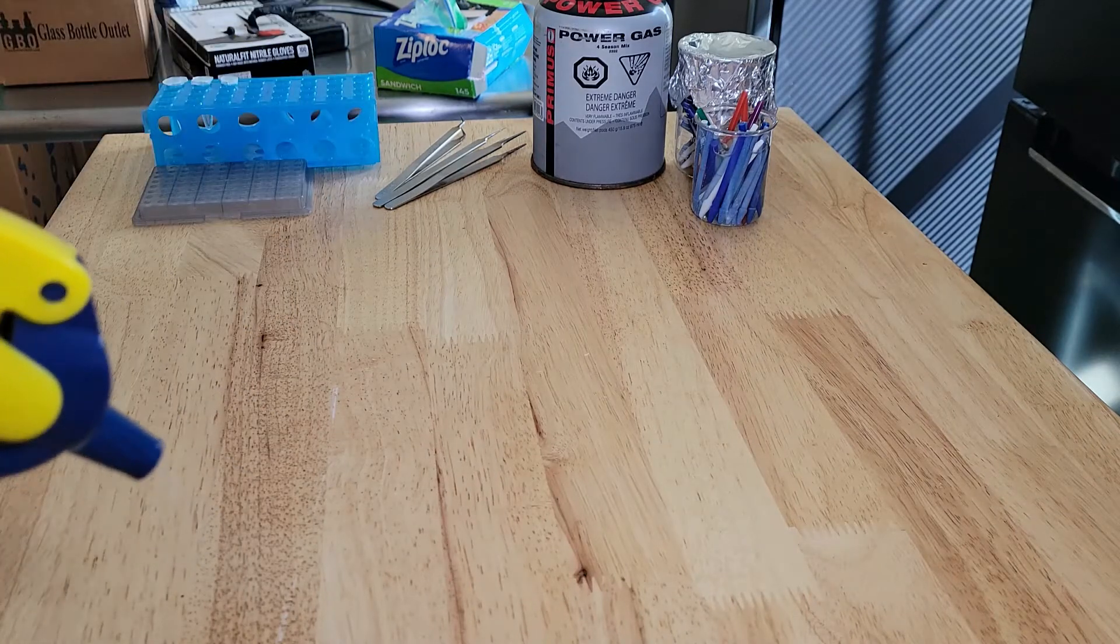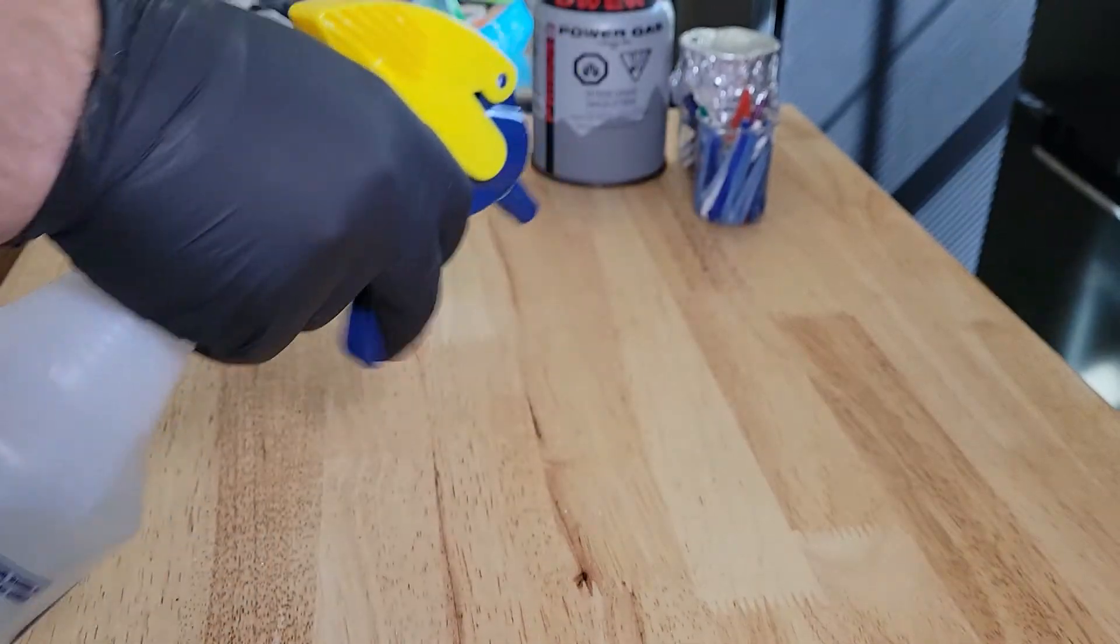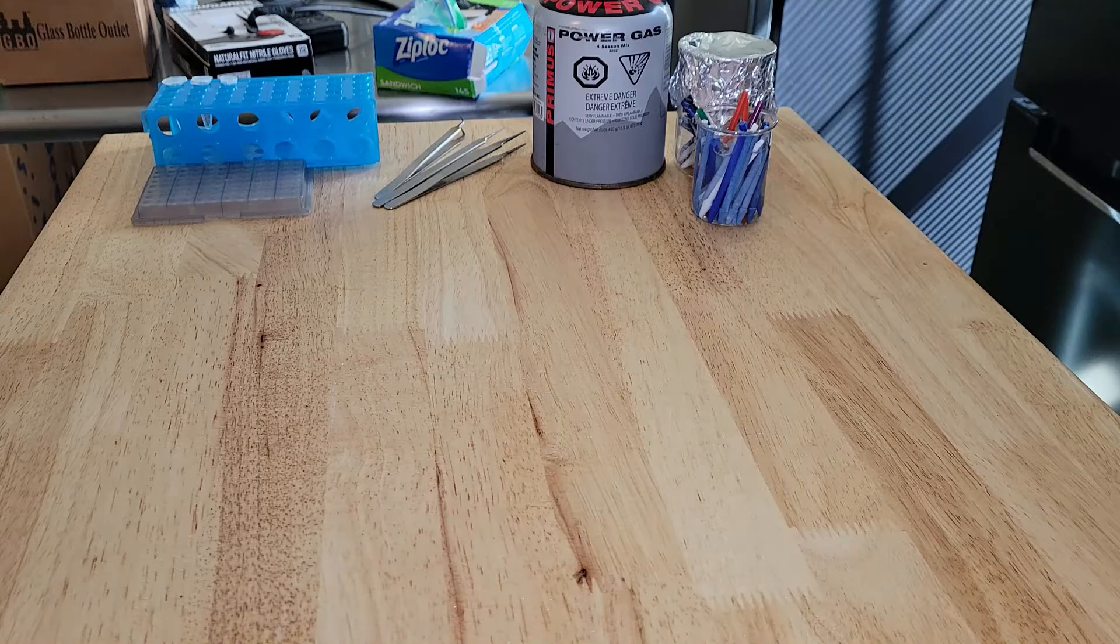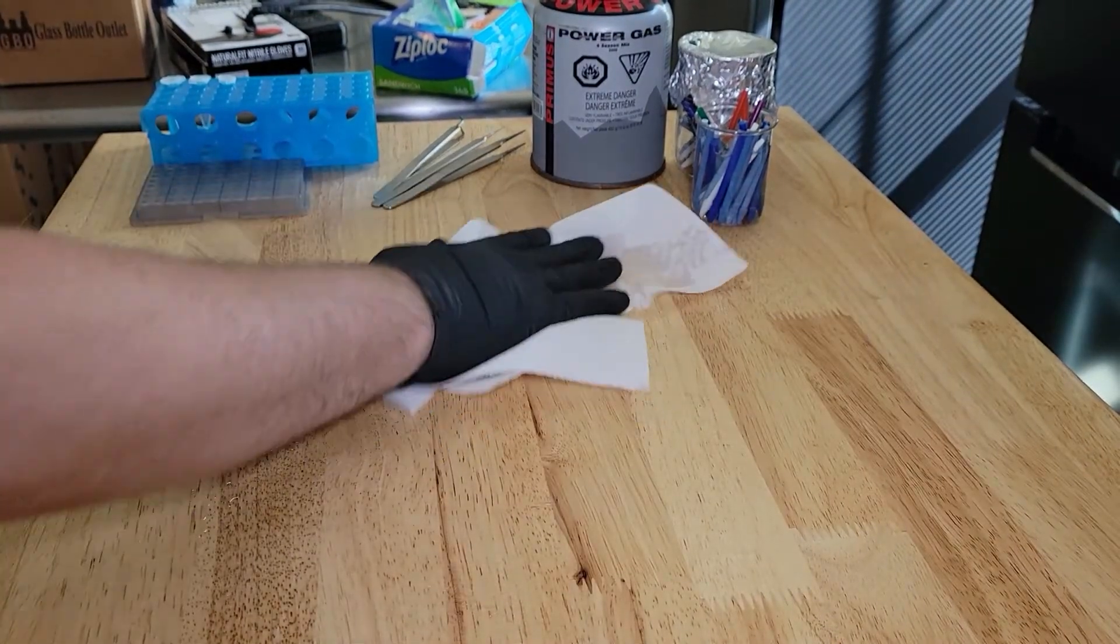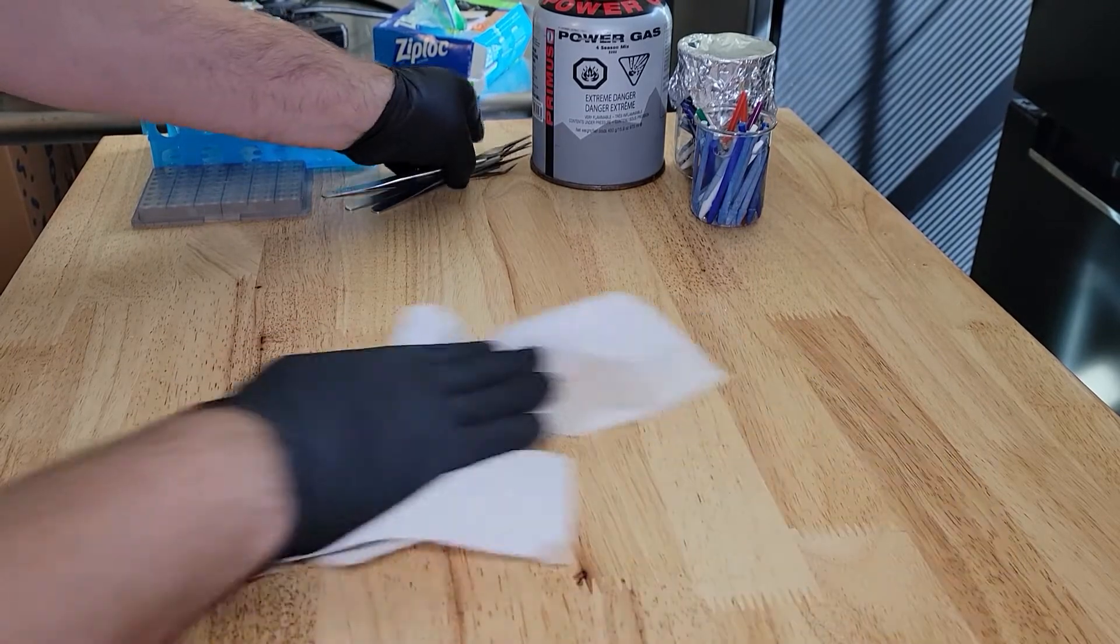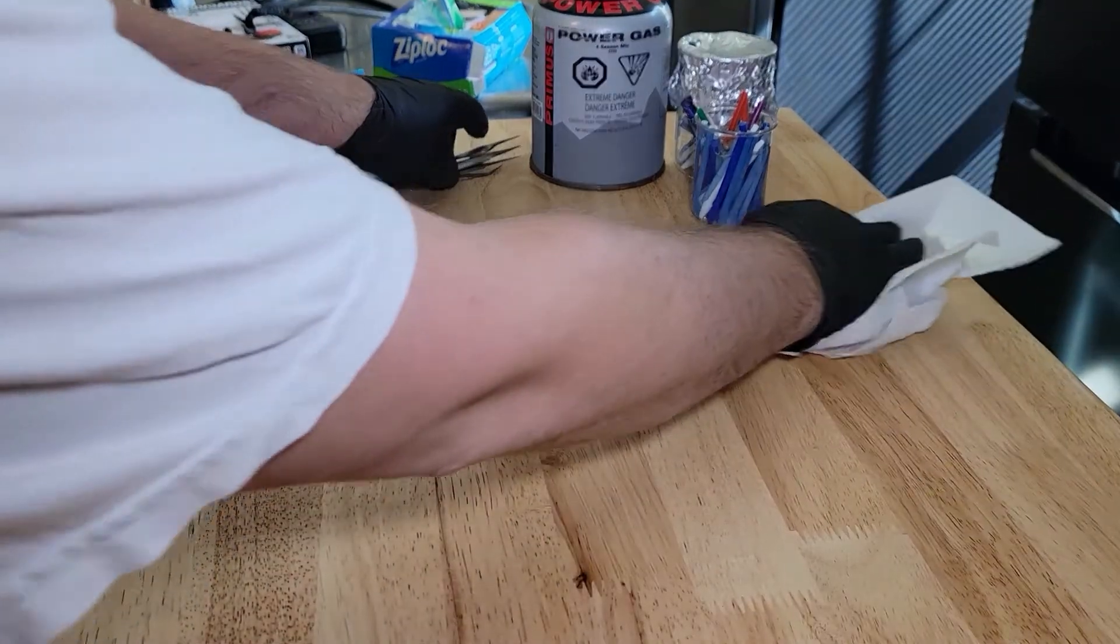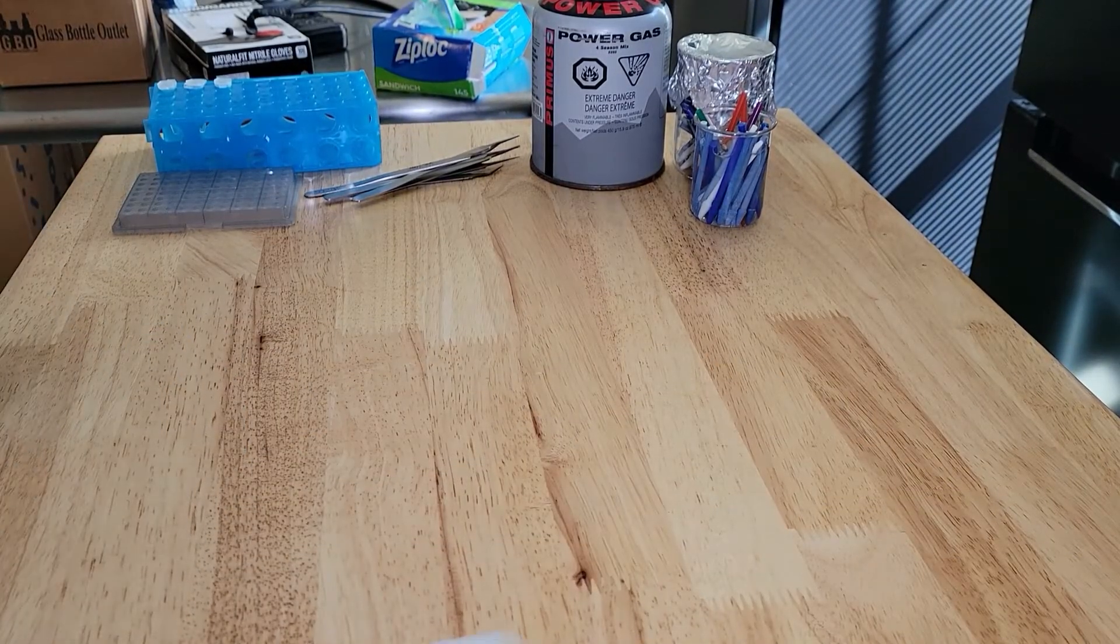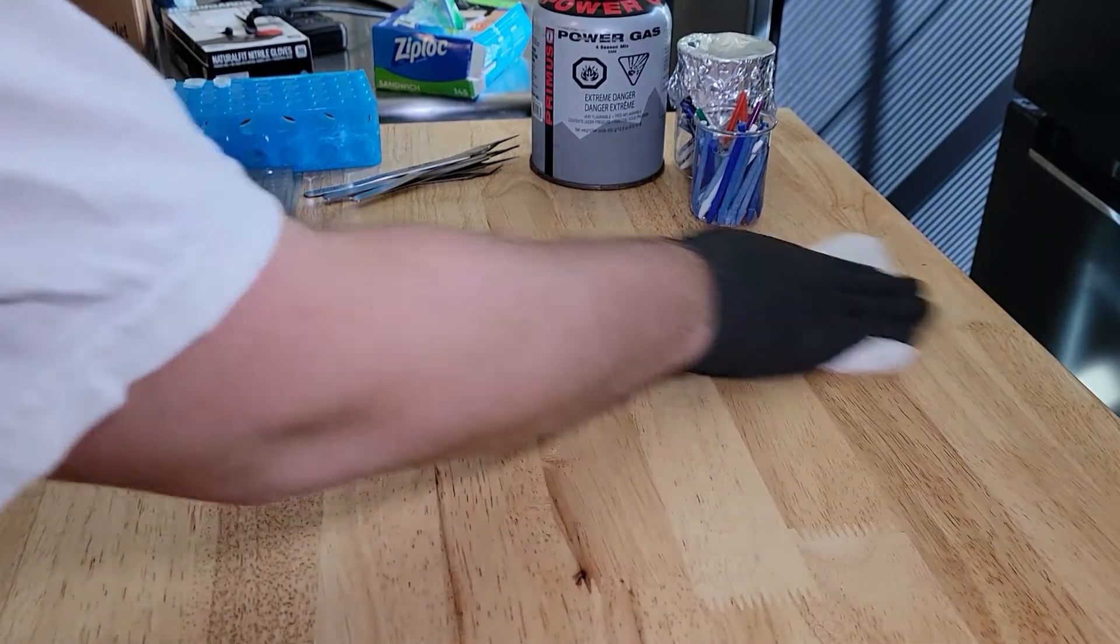Clean your work area with a 10% solution of bleach. The main purpose of this is not necessarily to disinfect, but you're going to be removing any unwanted DNA from your work surface because DNA breaks down in bleach.